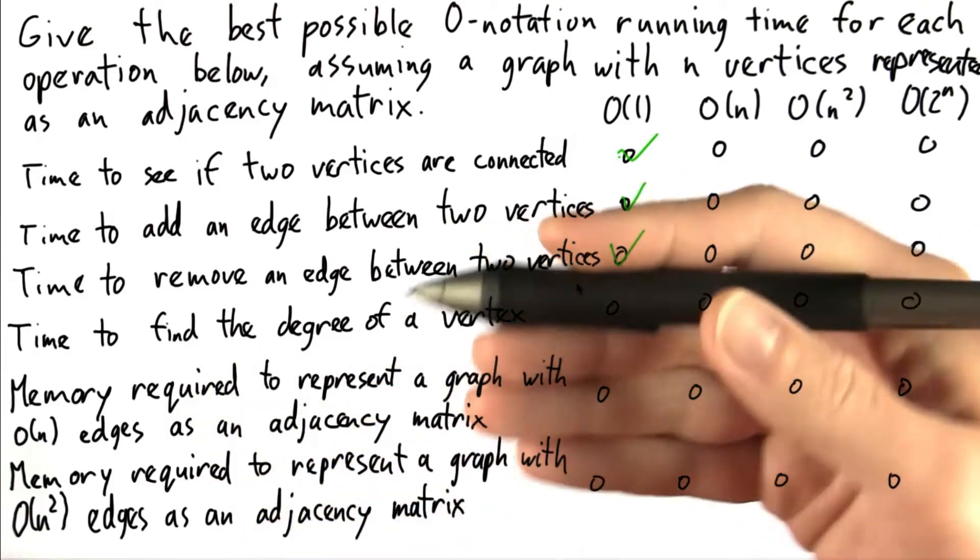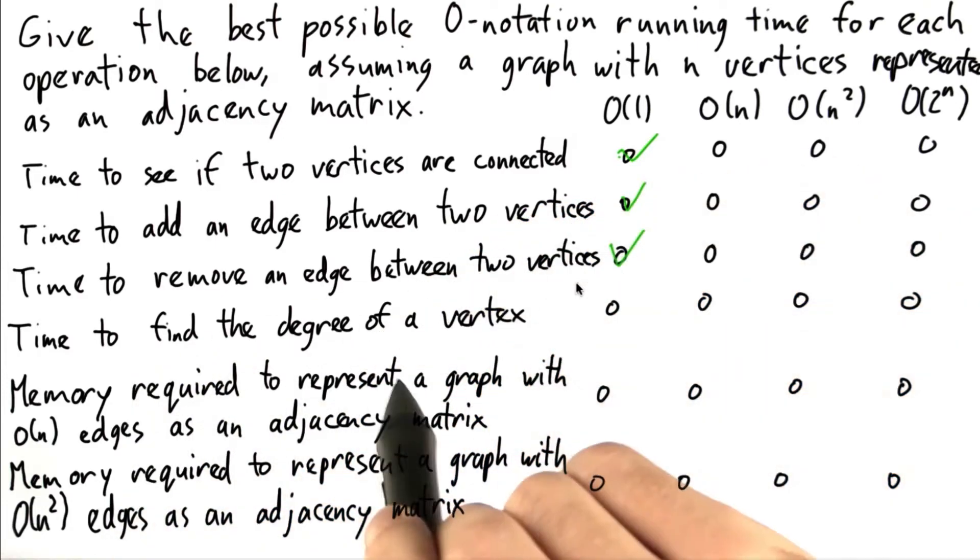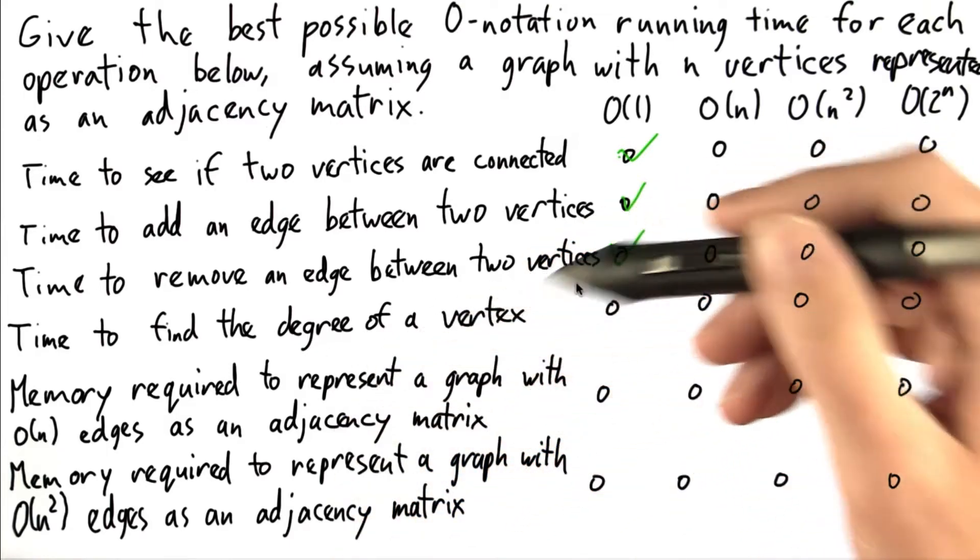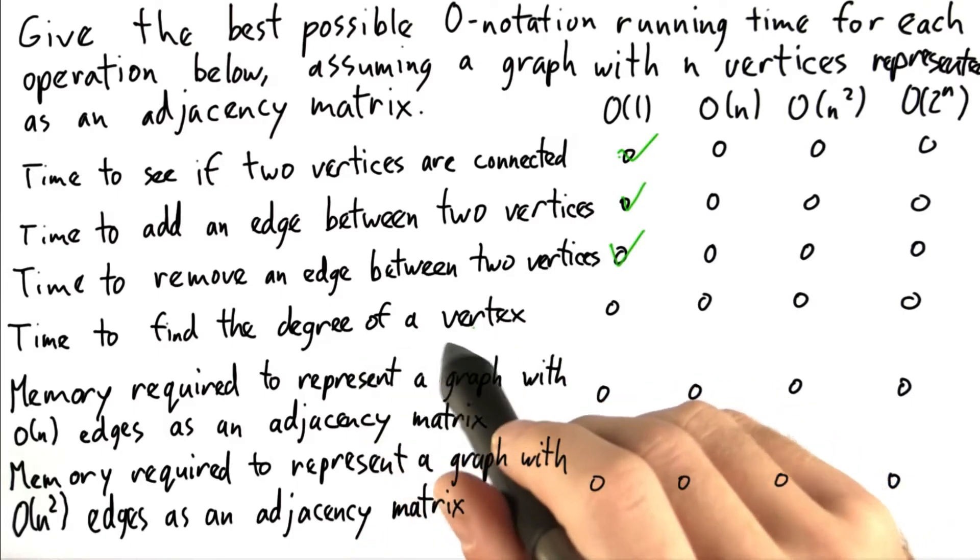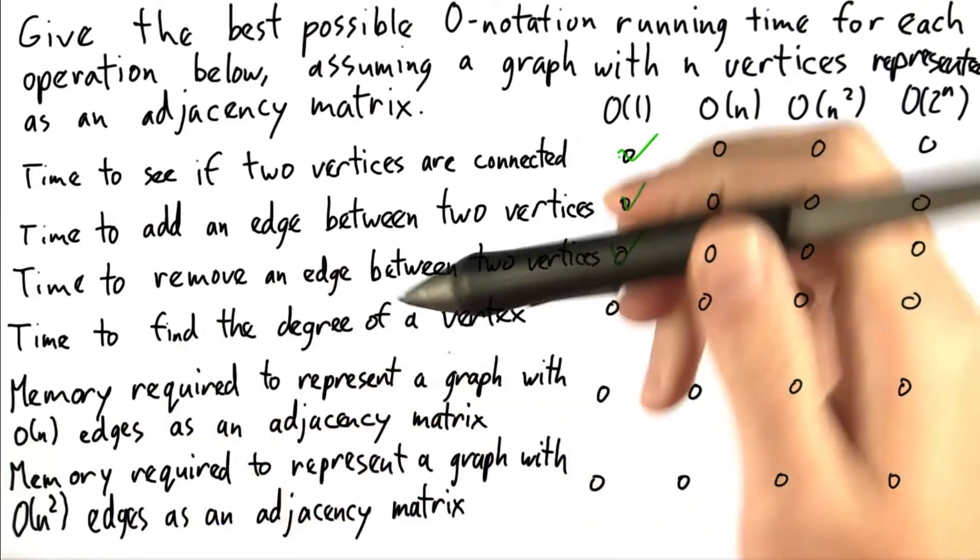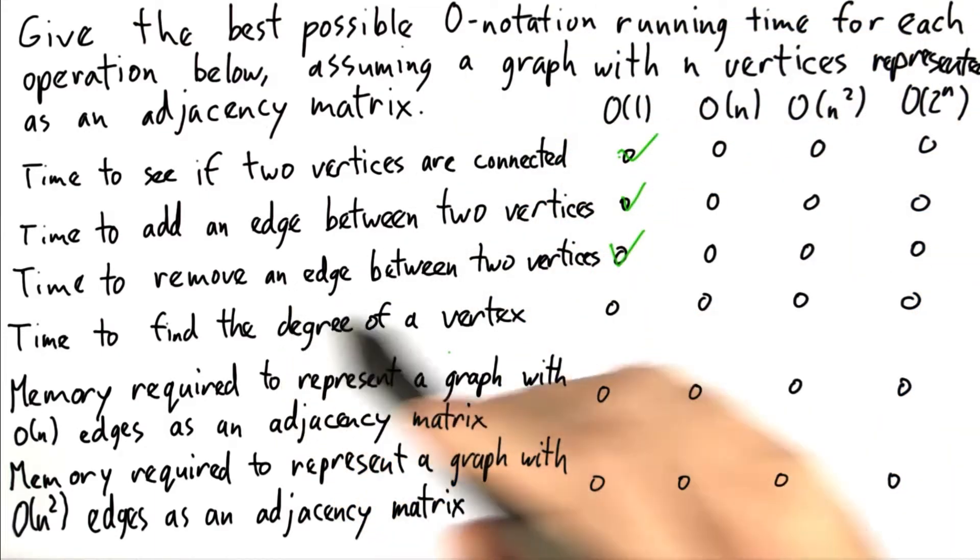Now, the time to find the degree of a vertex. It's a little bit harder to find the degree of a vertex, where the degree is the number of vertices that are connected to it. In order to find all of the vertices that are connected to a given vertex, we have to go down that row or that column one by one.